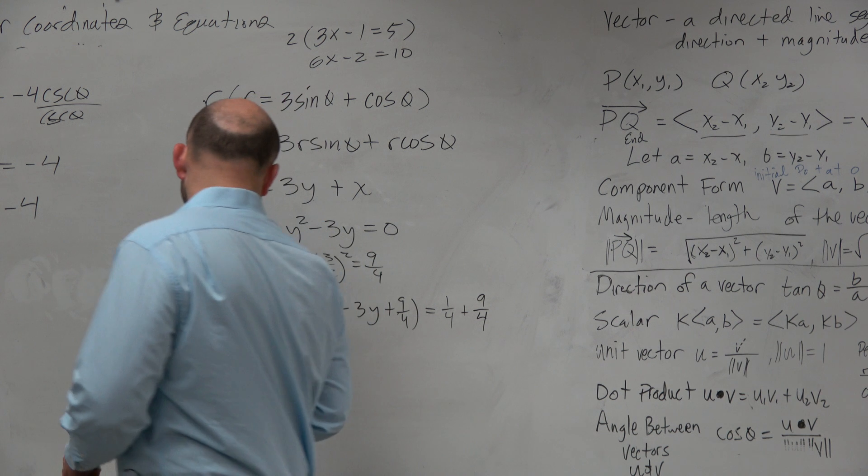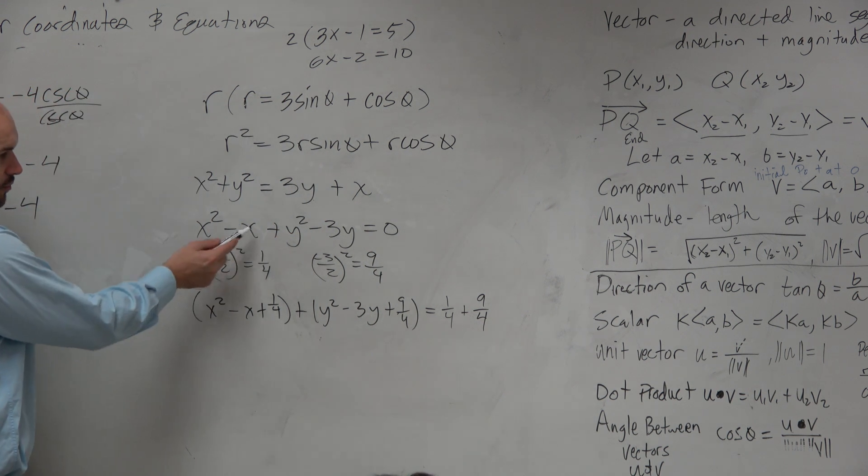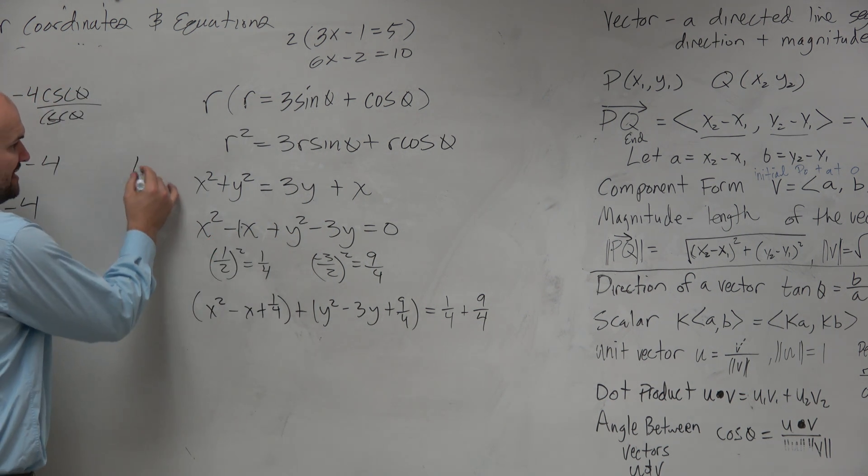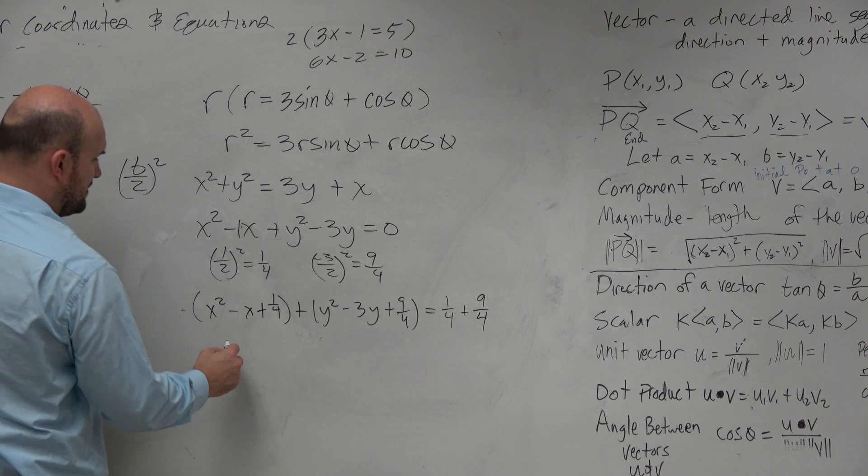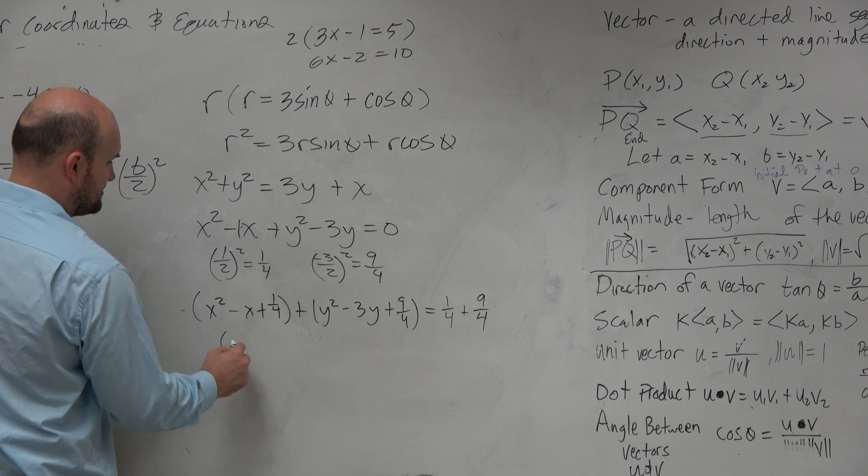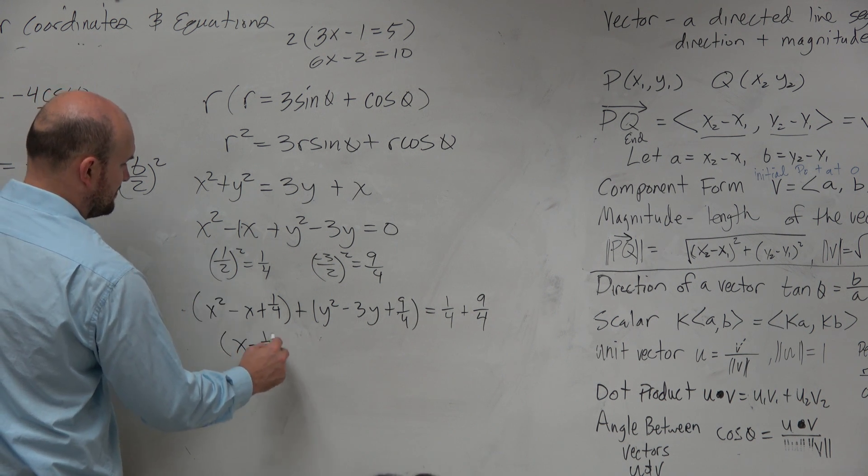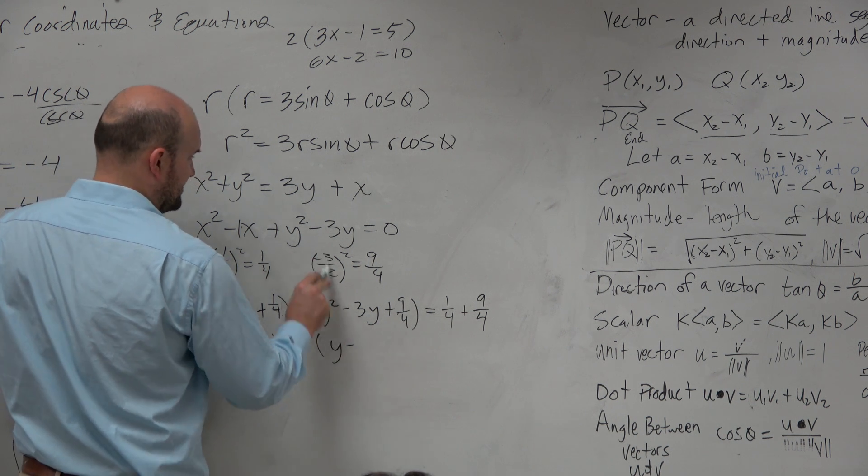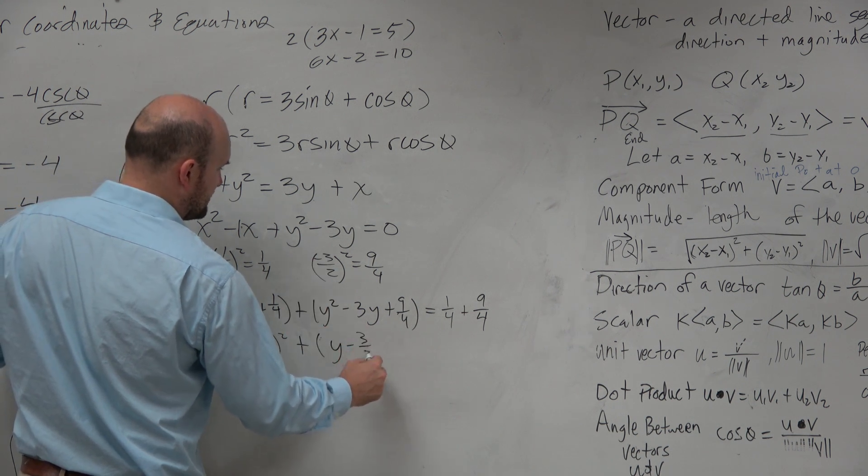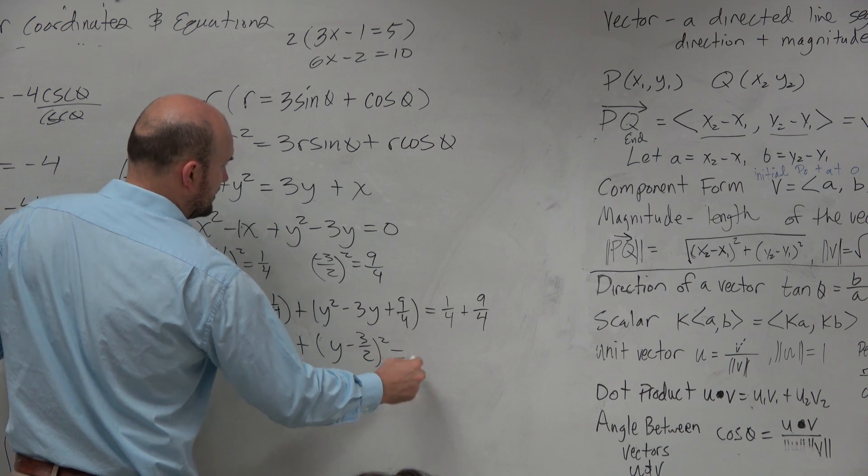Where did you get the 1 half? I took 1. Remember, it's b divided by 2 squared. So then you write this as a perfect square trinomial, which is really just your middle term, or your b divided by 2. So that becomes x minus 1 half squared plus y minus b divided by 2. It's 3 halves squared equals 10 fourths.